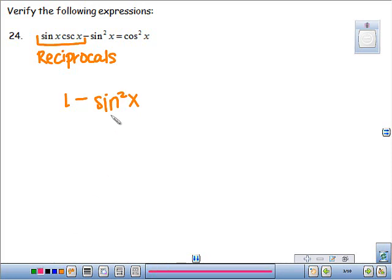Sine squared x plus cosine squared x equals 1. That's our Pythagorean ID. So, if I moved the sine over by subtraction, I can replace this with cosine x. And that's what I was going for. Done.